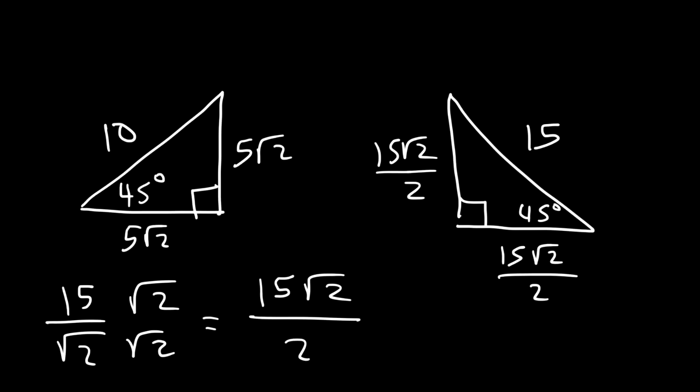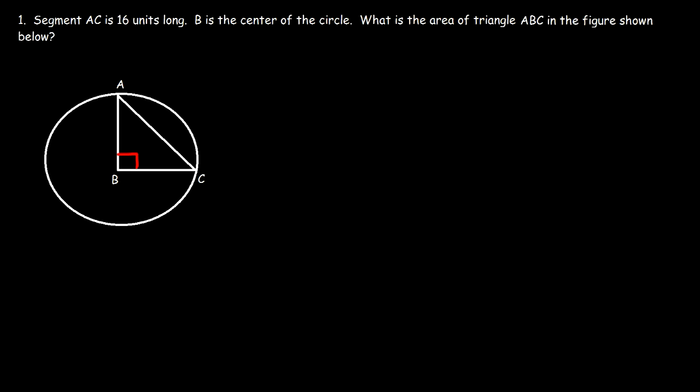Now let's consider a practice problem you might see on the SAT exam. Segment AC is 16 units long, B is the center of the circle — what is the area of triangle ABC in the figure shown? Is it a 30-60-90 triangle or a 45-45-90 triangle? Since this whole video is about 45-45-90 triangles, we know that's the case — but how can we be sure?